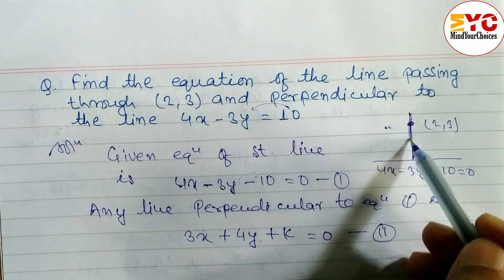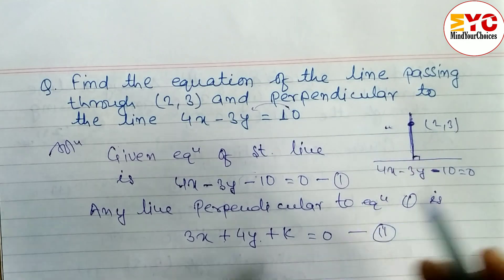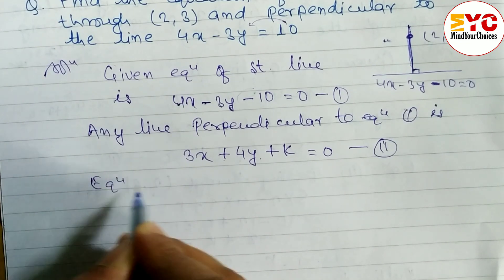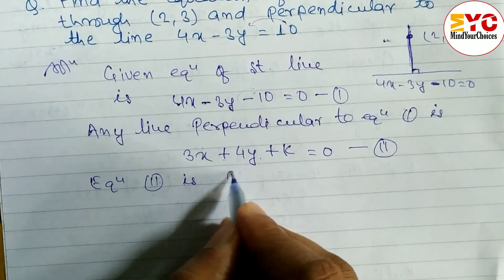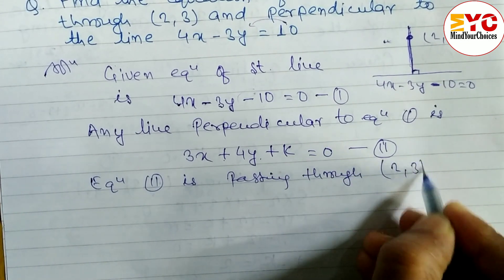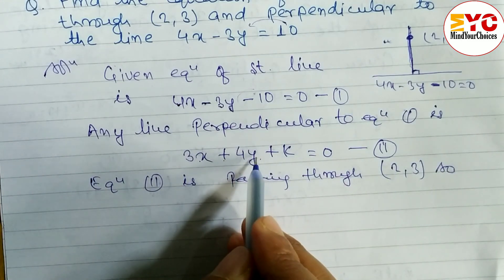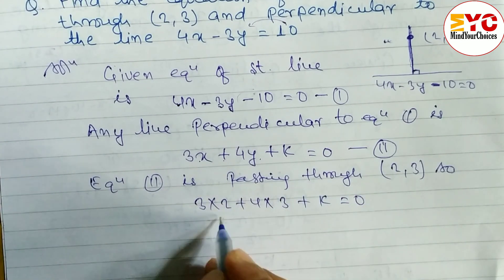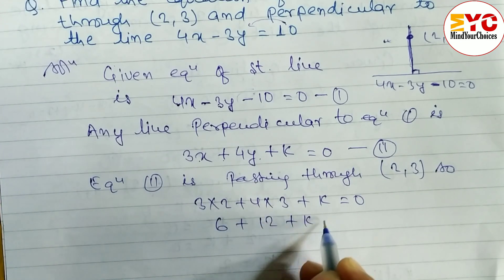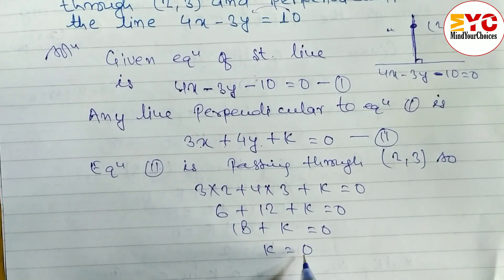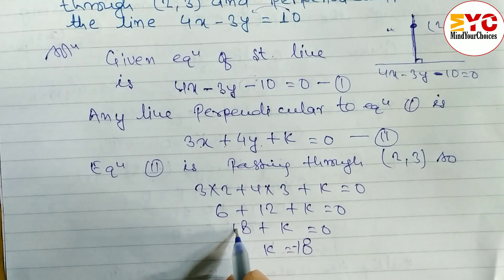This equation 2 passes through the point (2, 3), so we substitute x equals 2 and y equals 3. We get 3 times 2 plus 4 times 3 plus k equals 0, which gives 6 plus 12 plus k equals 0, so 18 plus k equals 0, and therefore k equals minus 18.